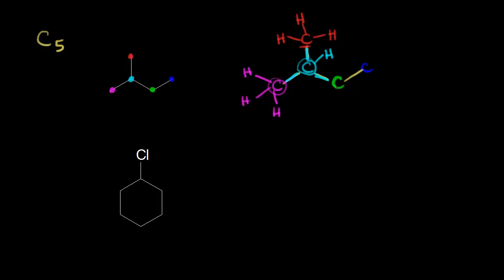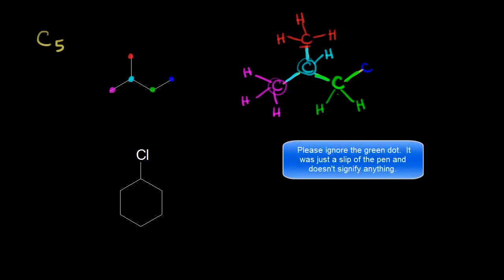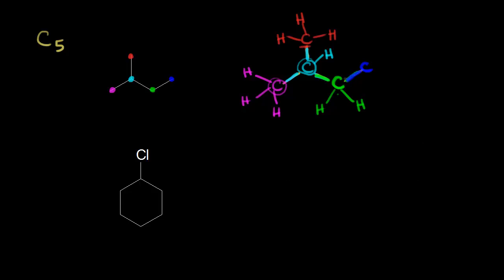Next, the green carbon already has two bonds, so it needs two more — two bonds to hydrogen. And finally the dark blue carbon already has one bond, so it needs three more bonds to hydrogen. So now we've drawn out the complete Lewis dot structure for this bond line structure. How many total hydrogens do we have? If you count those up, you'll get 12. So the molecular formula is C5H12.